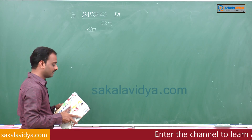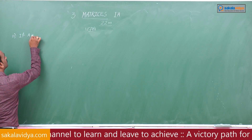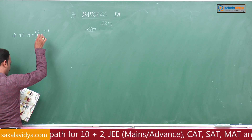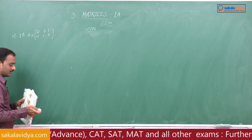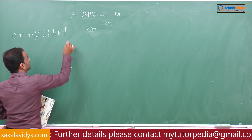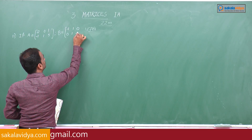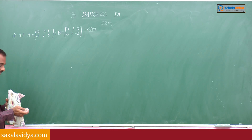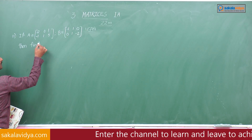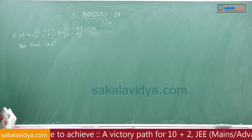Next, problem number 11. If matrix A equals [[2, 0, 1], [-1, 1, 5]] and B equals [[-1, 1, 0], [0, 1, -2]], find A into B transpose, whole transpose.